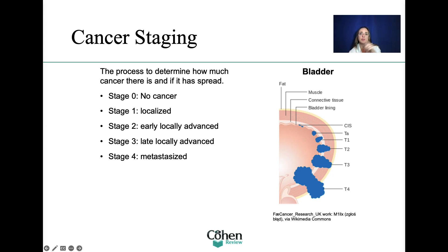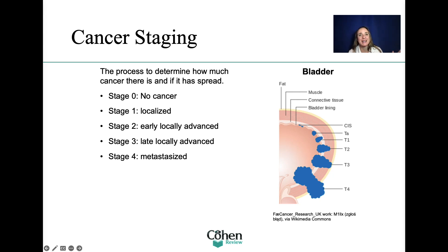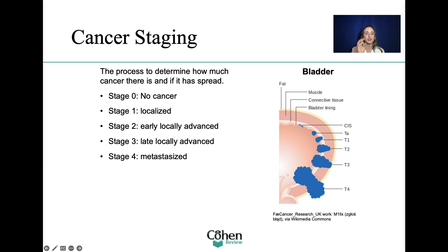You'll see that we have stages 0 through 4. Stage 0: no cancer. Stage 1: it's localized. Stage 2 is early locally advanced, so it's bigger in size. Stage 3 is late locally advanced. And Stage 4 is metastatic cancer — metastasis means that it has left its origin and has spread to other parts of the body. Once it reaches Stage 4, most Stage 4 cancers are no longer curable but rather treatable, meaning we focus on controlling further spread rather than achieving a cure.